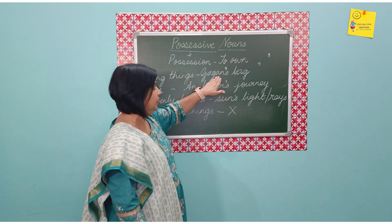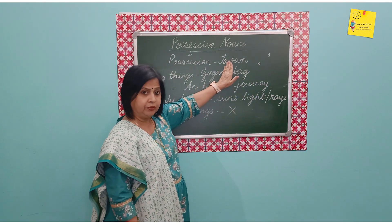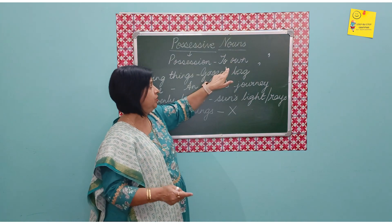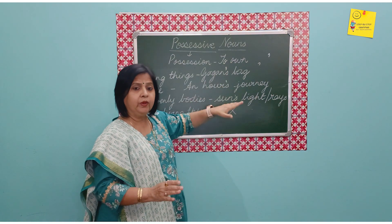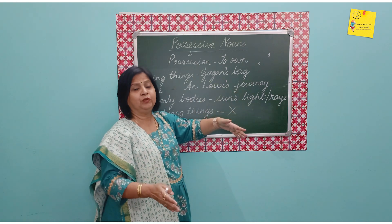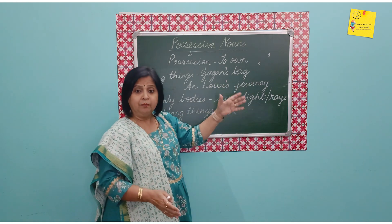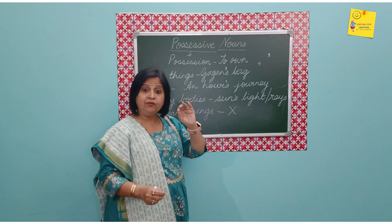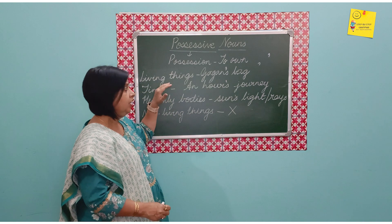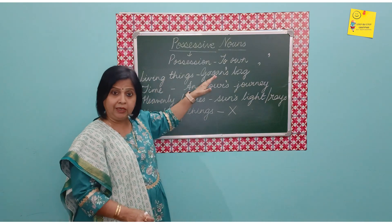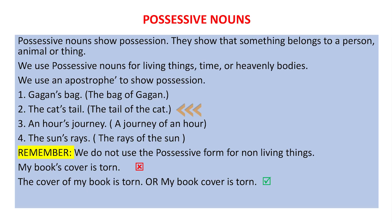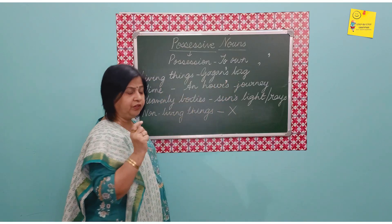So when we talk about Gagan's bag, Gagan is one person. To show that the bag belongs to him, we just put an apostrophe. There are many rules to be followed — we'll look at them one by one. Possessive nouns are used for living things. For example, Gagan's bag, or the tail of the cat becomes the cat's tail, or the journey of a river becomes a river's journey — the noun followed by apostrophe S.